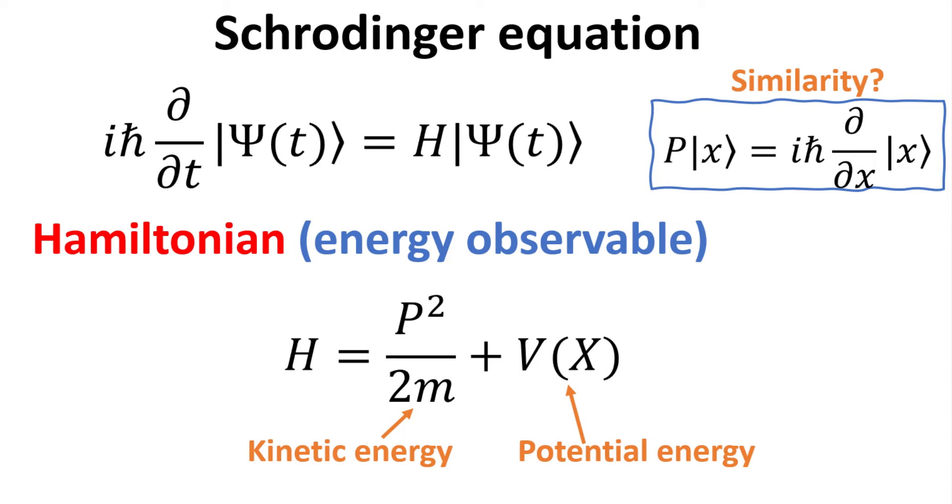Although there are heuristic arguments on how one can derive the Schrödinger equation, we shall not venture into it here. But the clue lies in noticing the similarity of this with the expression of the momentum operator in the position basis in the blue box, which we derived in previous videos. Indeed, energy and time are conjugate observables, just like position and momentum.